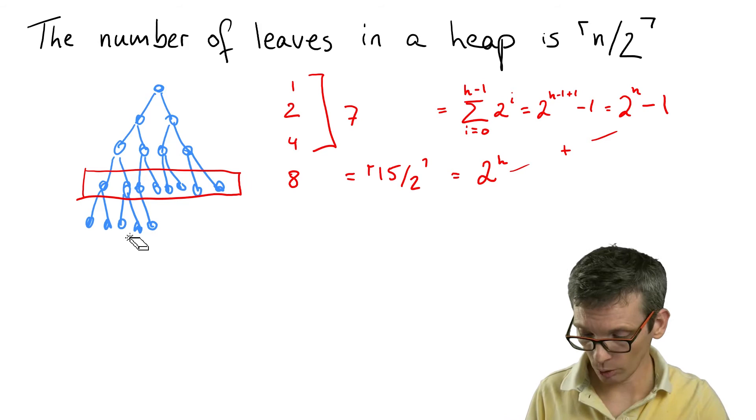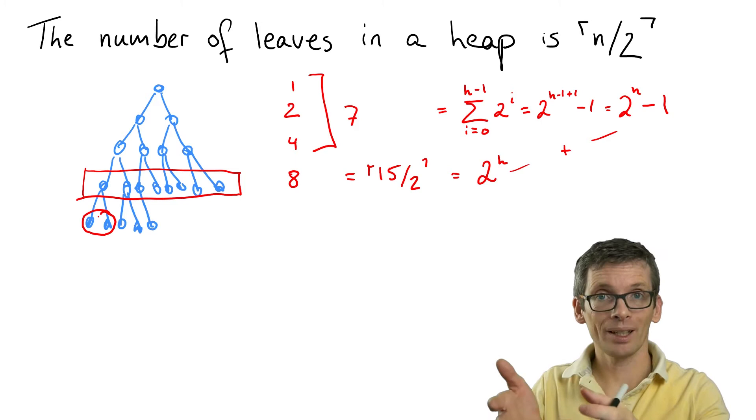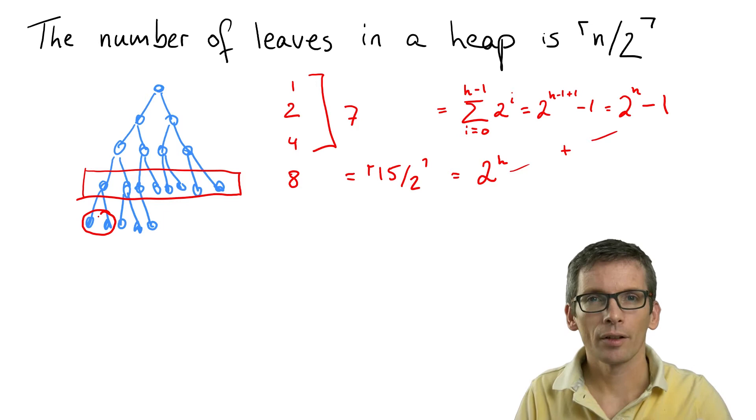Now, this is for a complete binary tree, but we have a nearly complete binary tree, so we cannot ignore those nodes down there. So let's first have a look at what happens if I add those two nodes to my complete binary tree. So how does the number of nodes and how does the number of leaves change?